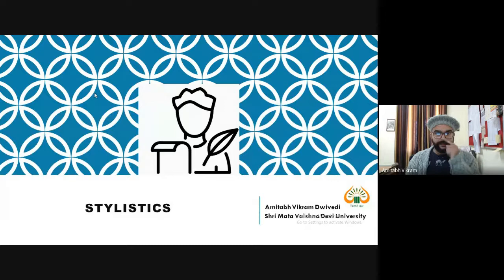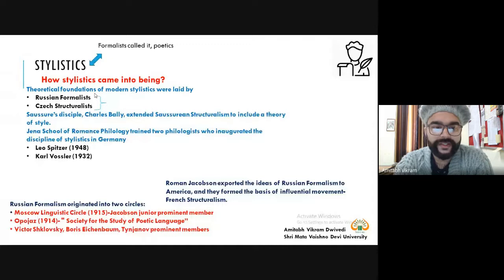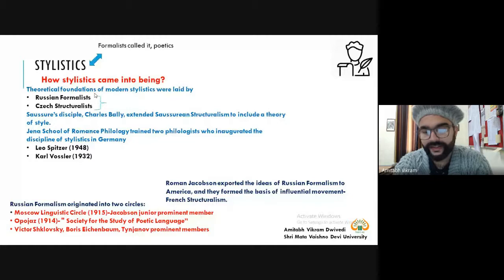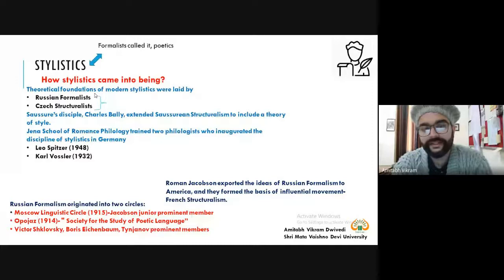We will continue from where we stopped last, and before that we will have a quick recapitulation. In the last classes we were discussing stylistics and the historical background of stylistics. We have seen how different movements — Russian Formalism and Czech Structuralism — were responsible for giving a base to modern day stylistics, and we will also see that there is some extension in stylistics, which in earlier days was known as poetics.